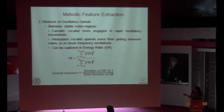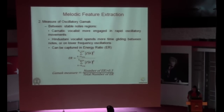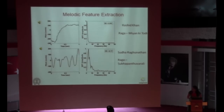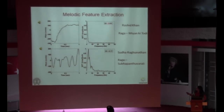The numerator of the energy ratio covers the range from 3 to 7.5 Hz, which is essentially the vibrato range. The gamak measure was calculated as the number of energy ratios greater than 0.3 to the total number of energy ratios in that clip. These are example pitch contours of gliding movement and oscillatory gamak — the energy ratio is seen to be low for the gliding contour and high for the oscillatory one.